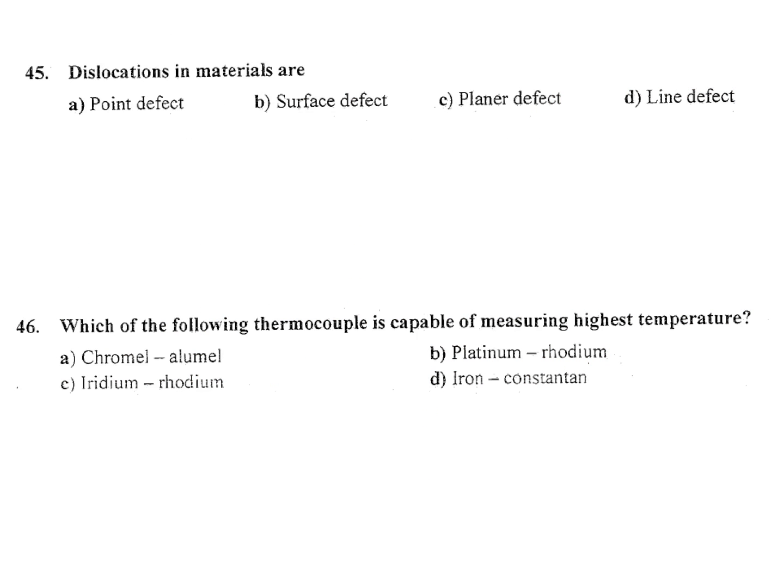Next: dislocation in materials — is it A) point defect, B) surface defect, C) planar defect, D) line defect? Dislocation is a line defect. Two dislocations are important: edge dislocation and screw dislocation.